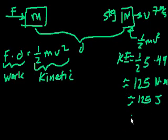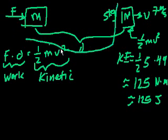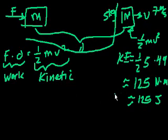So if we actually put numbers in, when we calculate kinetic energy as 125 joules, we immediately know that's the amount of work that was necessary to accelerate the object to 7 meters per second — even if we don't know exactly how the object got to that velocity.